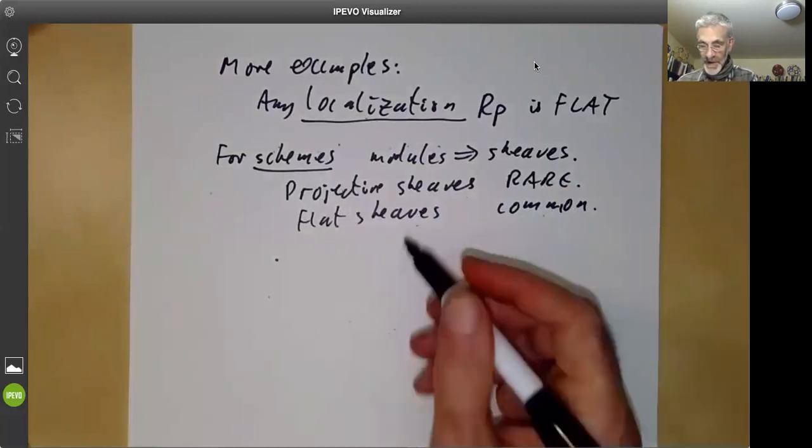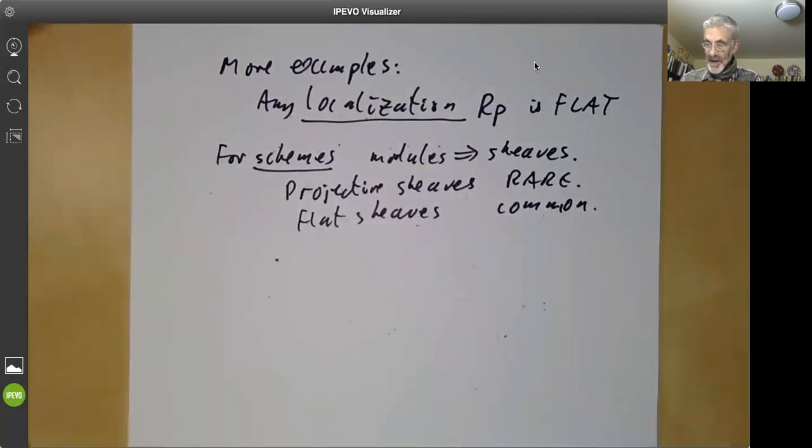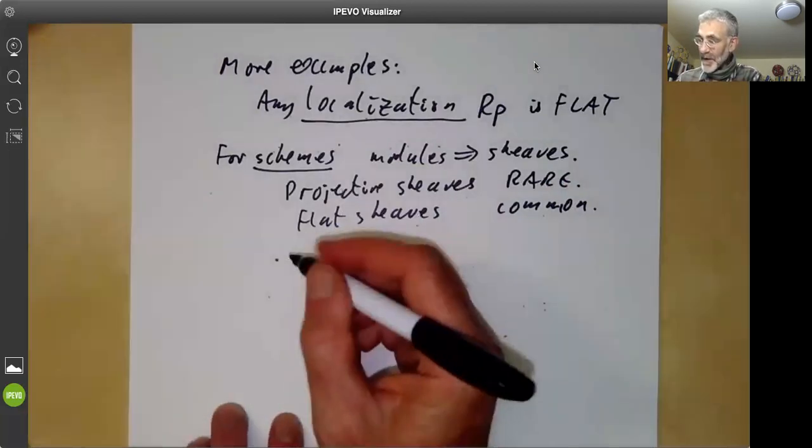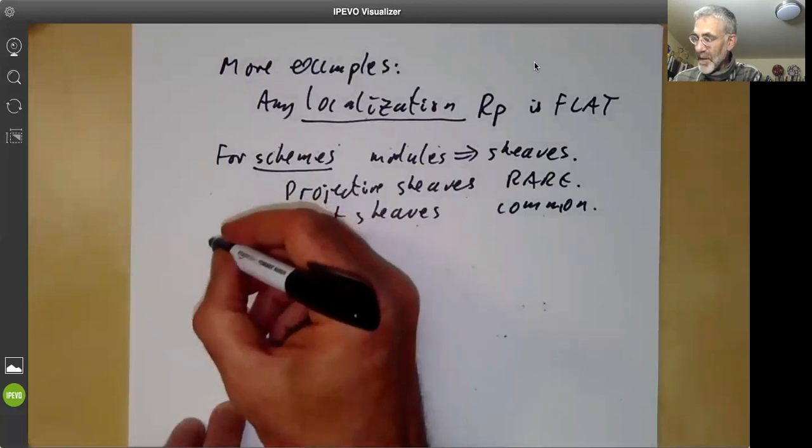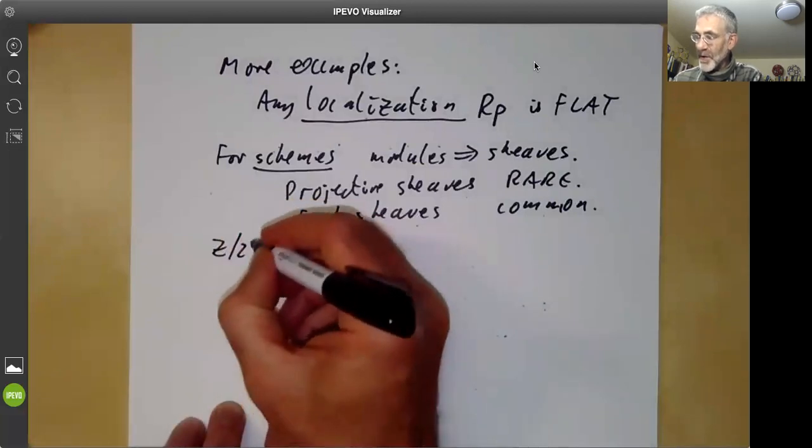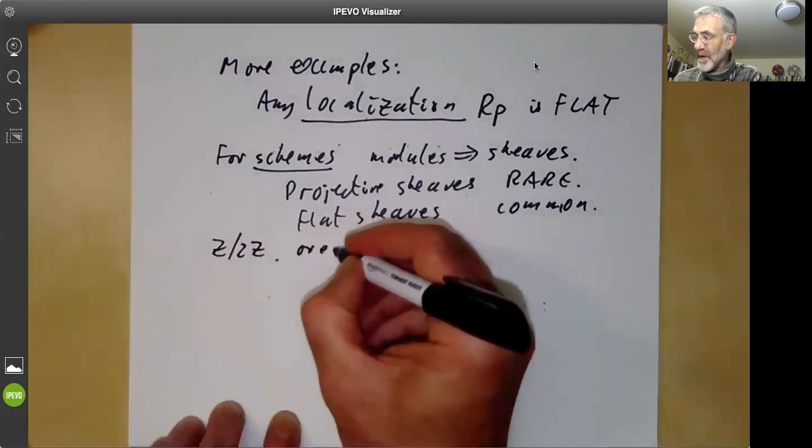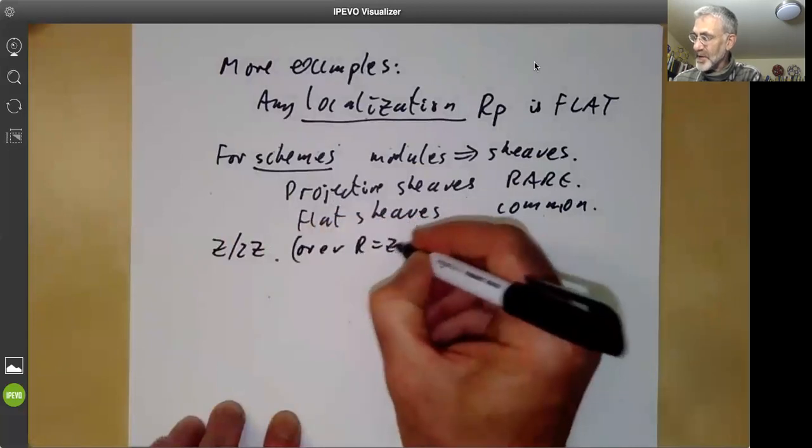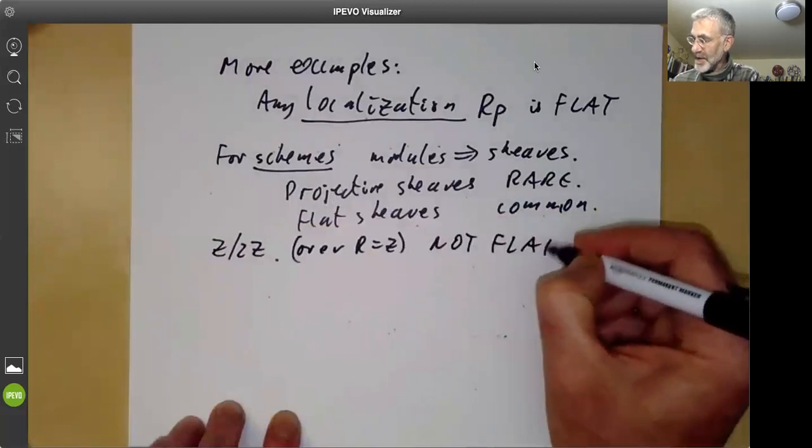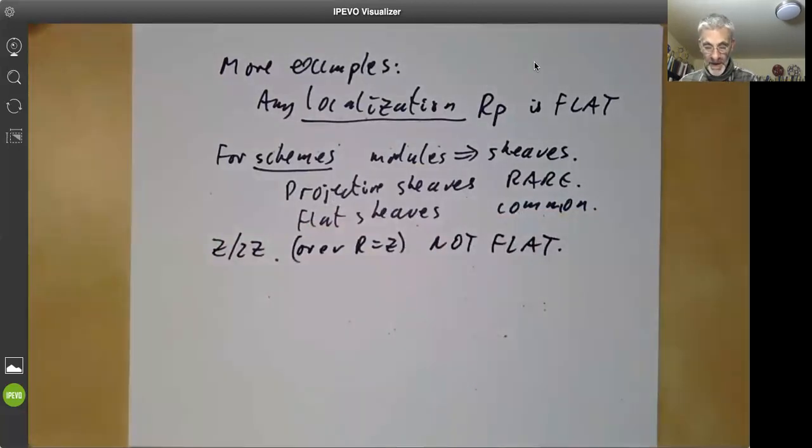And we should also just remind a few examples of modules that are not flat. So the standard example of a module that's not flat is the module z over 2z over the ring r is the integers. So this is not flat, as we've seen earlier several times.